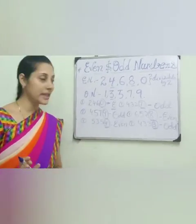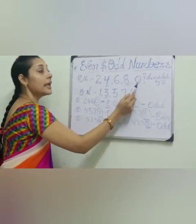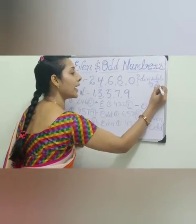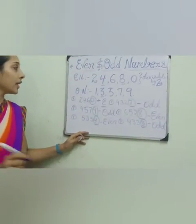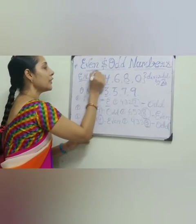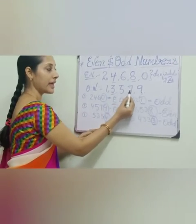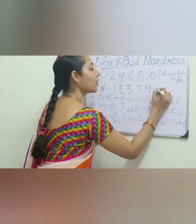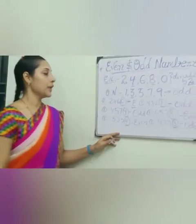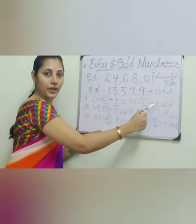It is really very easy. You have to see only the ones place digit — whether it is divisible by 2. Those are called even numbers. The numbers whose ones place is 1, 3, 5, 7, or 9 are called odd numbers. Very good. Did you understand even and odd?